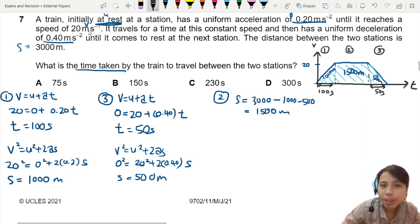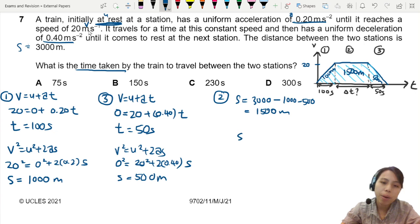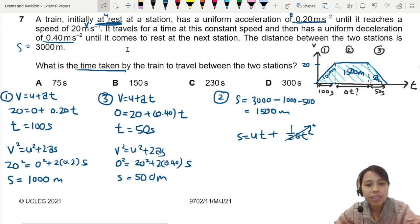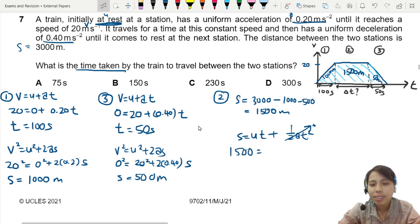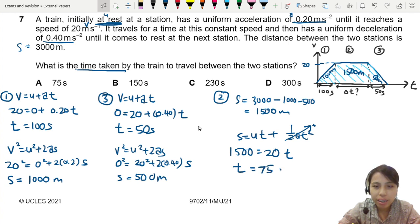I think from there we can try to find what is this time taken, or time interval. In this section, there is no acceleration. But we can use S equals to UT plus half AT squared. This part is gone. It's like your distance equals to velocity times time. This is where the equation comes from. So distance is 1,500. Speed you are travelling at is kind of fixed at 20. So we'll just write 20 and time. So the time here should be 75 seconds.